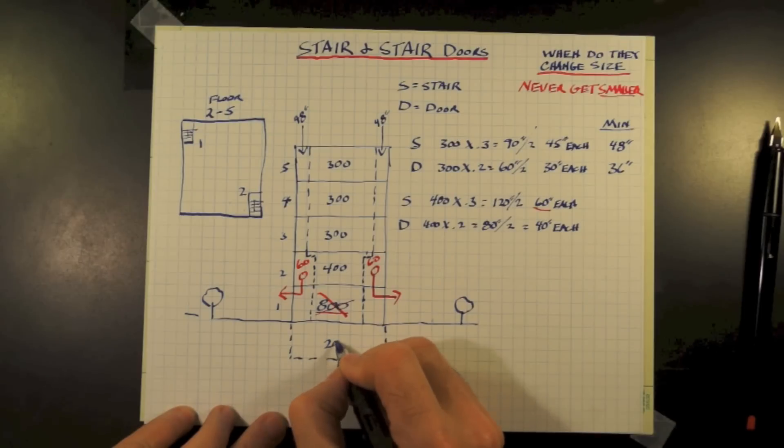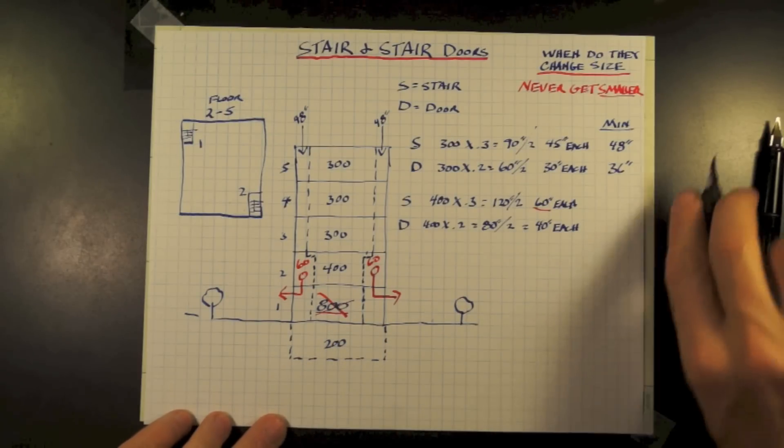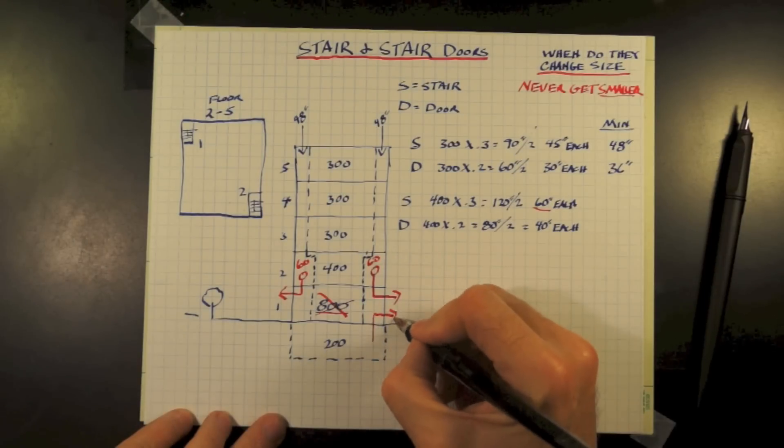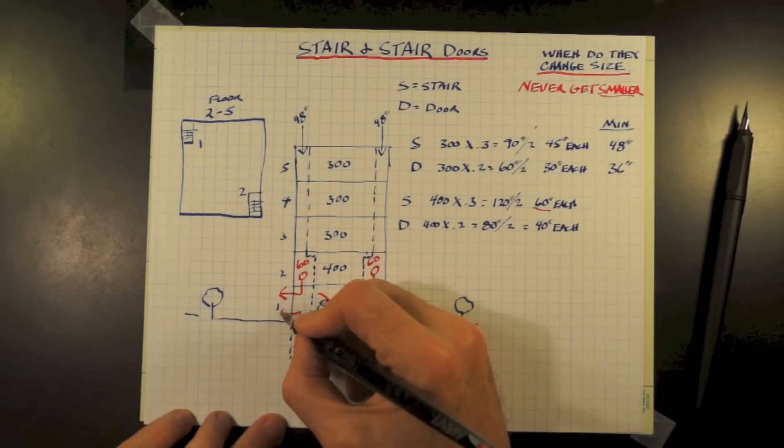Our stair width is required to be a minimum of 60 inches because of the calculation. So now let's throw a basement into this with a simple occupant load of 200.